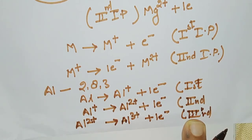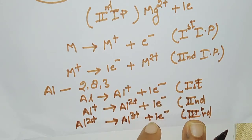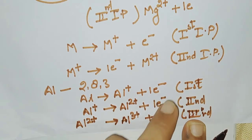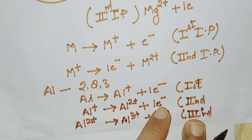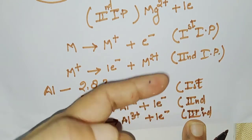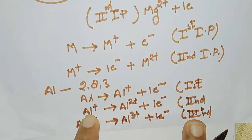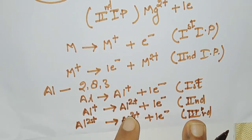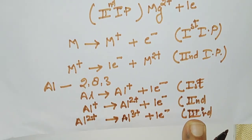So it depends on the state in which the electron is being released. The energy absorbed when the first electron is released is first ionization potential; when the second electron is released, the energy absorbed by the atom is second ionization potential; and when the third electron is released, it is third ionization potential.